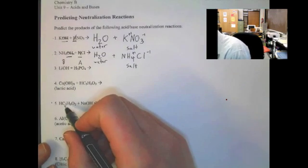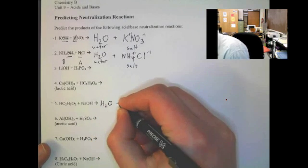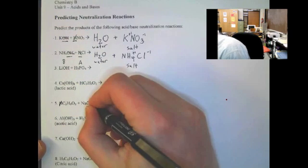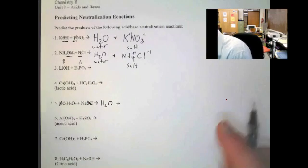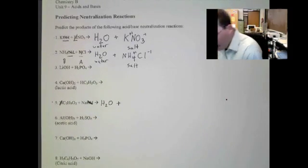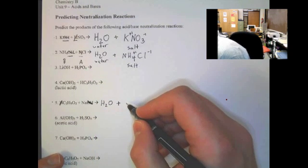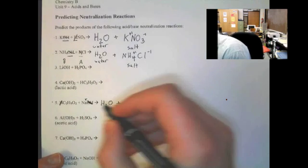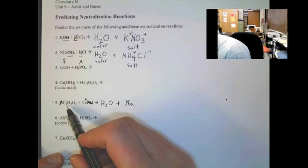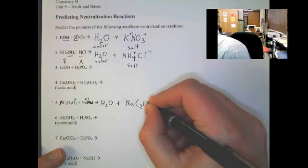Finally, we have acetic acid and sodium hydroxide. First product, again, always H2O. We get rid of the hydrogen out front of acetate and get rid of the hydroxide behind sodium. Notice these two are switched — we no longer have the base written first in the equation, but that's not a big deal. Remember: the cation gets written first. Sodium is positive, +1, so it gets written first. Acetate, C2H3O2, is our anion with a −1 charge and gets written second. So we get sodium acetate, NaC2H3O2.